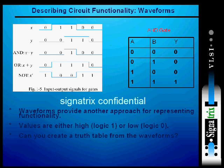Describing circuit functionality with waveforms, let's see how these work. Waveforms provide another approach for representing functionality. The values are either high, logic 1, or logic 0, that is low. Can you create a truth table from these waveforms? Yes.